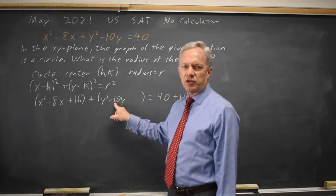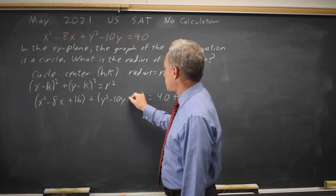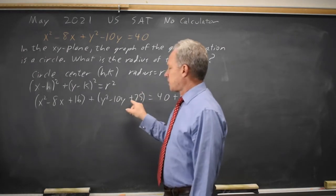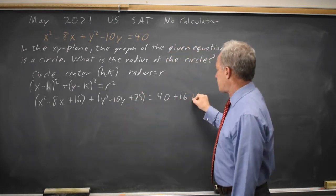Half of negative 10 is negative 5, squared is positive 25. I just added 25 on the left, I'll add 25 on the right.